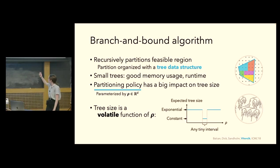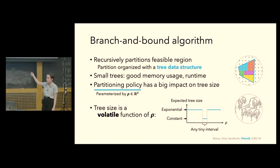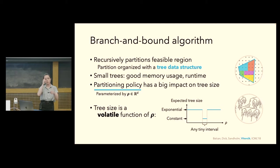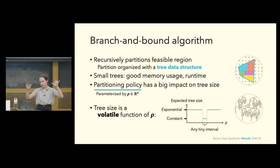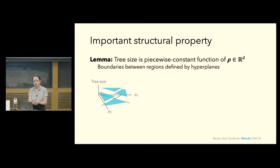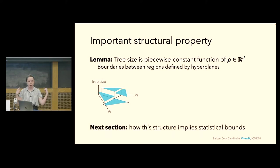Tree size is a very volatile function of the branch-and-bound parameters. For example, we prove that for any tiny interval of the parameter space, there exist infinitely many distributions over integer programs such that for any parameter setting in that interval, branch-and-bound builds a tree of constant size with probability 1, while for any other parameter setting it builds a tree of exponential size in expectation. Despite this volatility, we identify useful structure: tree size is a piecewise constant function of the tunable parameters, with boundaries between regions defined by hyperplanes.